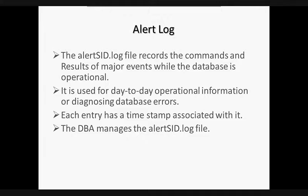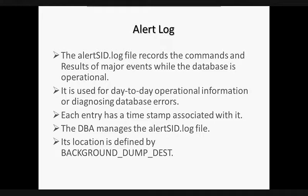The alert log file keeps a record of the following information: when the database was started or shut down, a list of all non-default initialization parameters, the startup of background processes, the thread being used by the instance, log sequence number the log writer is writing to, information regarding a log switch, creation of tablespaces and undo segments, ALTER statements that have been issued, and information regarding error messages such as ORA-600 and extent errors. The location of the alert log file is defined by the parameter BACKGROUND_DUMP_DEST, and its default location on Unix is $ORACLE_HOME/rdbms/log.